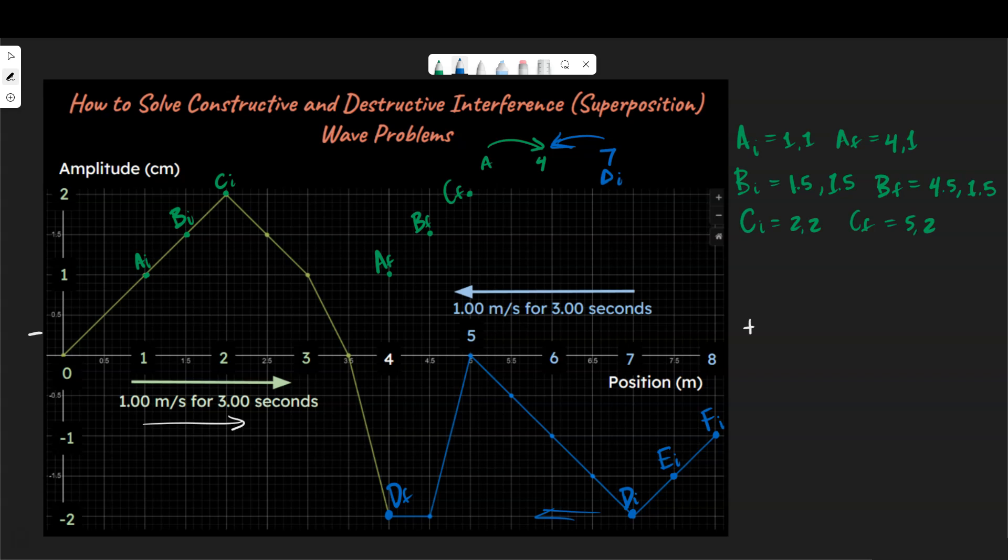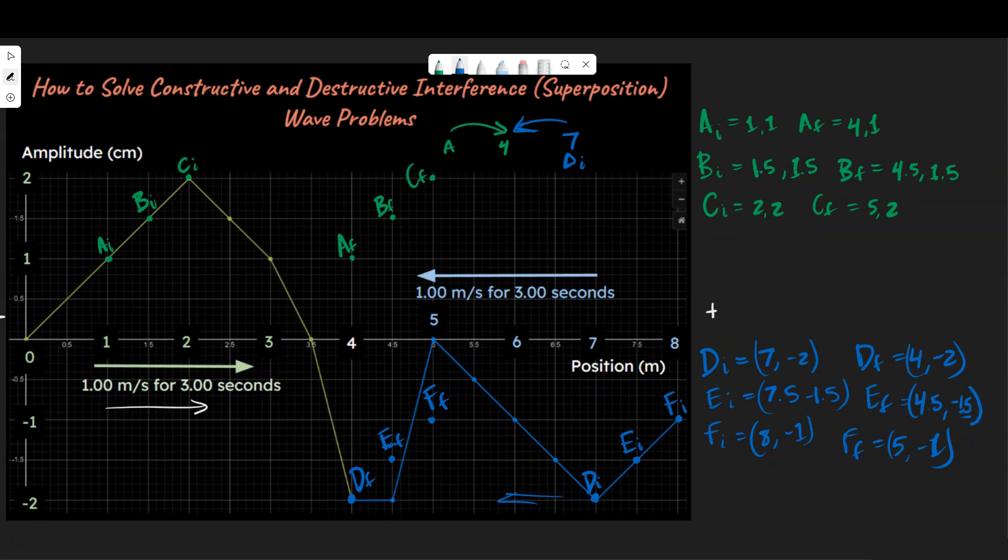E final is going to be at the same height value, but we will call this E final over here. And F final is going to have a position right here. So we could list this out. D initial equals (7,-2). E initial equals (7.5,-1.5). And F initial equals (8,-1). After three seconds, D final ends up being (4,-2), E final ends up being (4.5,-1.5), and F final ends up being (5,-1). Those are our points so far.